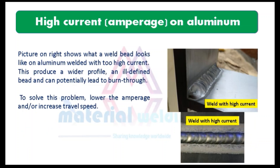Number 8 is high current or amperage in aluminum welding. The picture on the right shows what a weld bead looks like on aluminum welded with too high current. This produces a wider profile, an ill-defined bead, and can potentially lead to burn-through. To solve this problem, lower the amperage and/or increase travel speed.